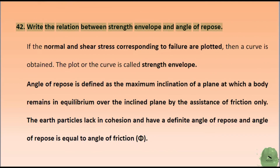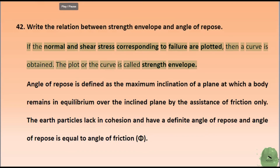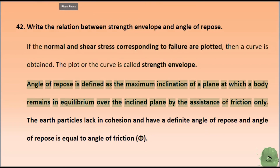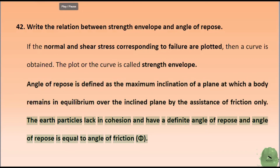Write the relation between strength envelope and angle of repose. If the normal and shear stress corresponding to failure are plotted, a curve is obtained; this plot or curve is called the strength envelope. Angle of repose is defined as the maximum inclination of a plane at which a body remains in equilibrium over the inclined plane by the assistance of friction only. Earth particles lack cohesion and have a definite angle of repose, which is equal to the angle of friction Φ.